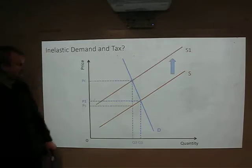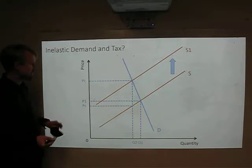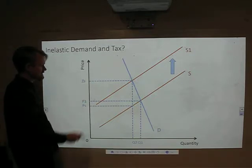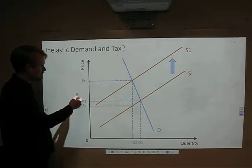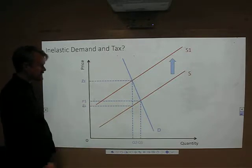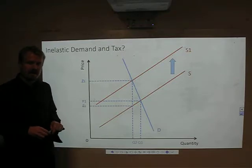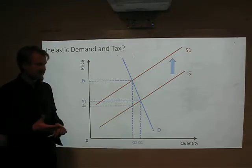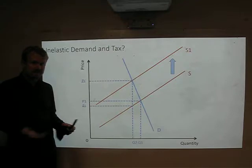Put the tax on there, and you can see that the price that the consumer pays has gone up by quite a bit, from P1 to PC. The price that the supplier receives hasn't gone down by very much. You can explain this by saying who's actually paying for this tax. Is it the producer or the consumer?